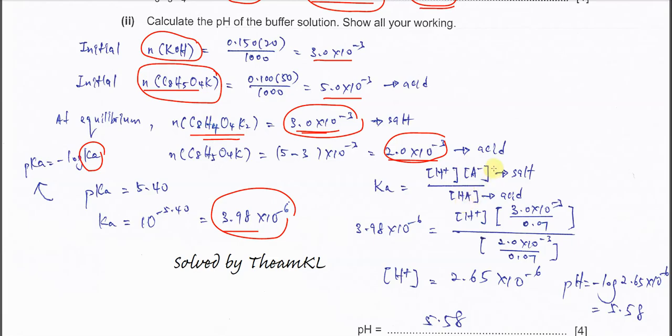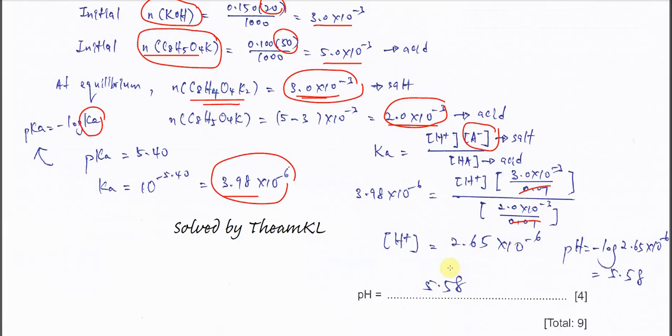Ka equals the hydrogen ion concentration times the salt concentration over the acid concentration. Substitute the concentration of the salt. The salt is 3 times 10 to the negative 3 over 0.07 dm cubed. Over the mole of the salt, 2 times 10 to the negative 3 over 0.07 dm cubed. This one eliminates.